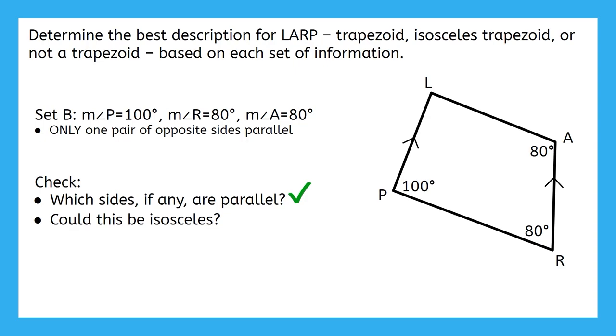Angles R and A are a pair of base angles, since they're both on one of our parallel sides, and they're congruent. Since we have a pair of congruent base angles, this means that LARP is an isosceles trapezoid.